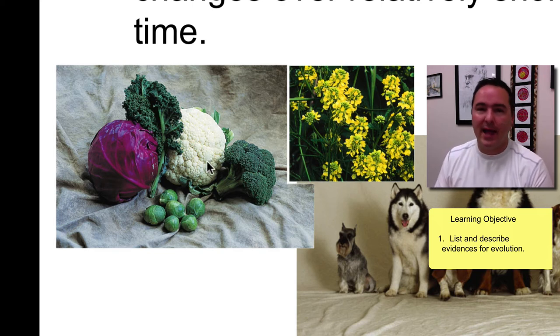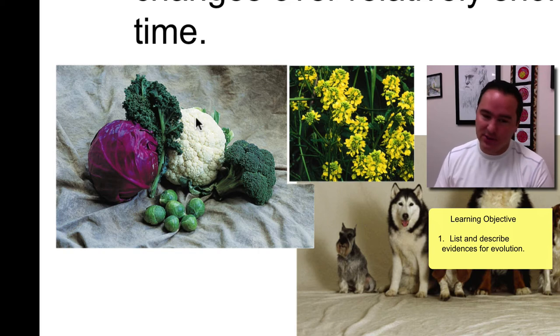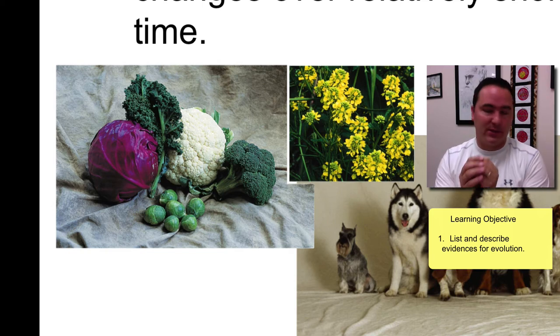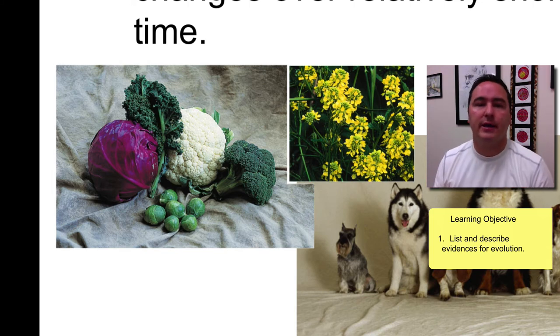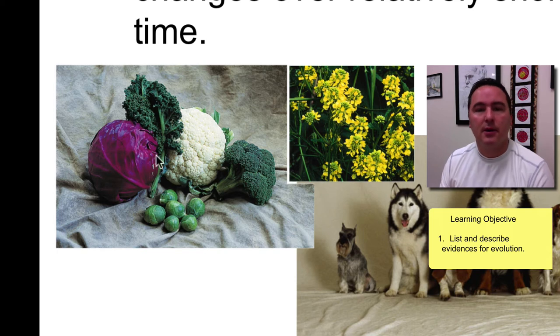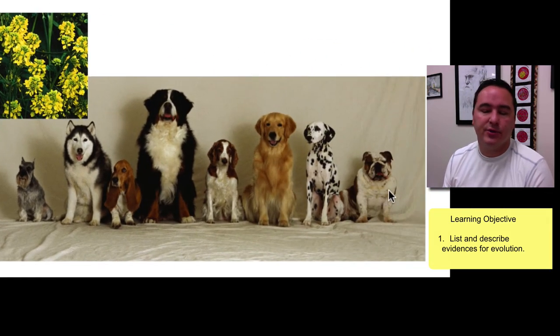This is documented. We know that this is what happened because there were farmers who said, 'I'm going to make a plant that has extremely large flower parts,' and so they selectively looked for those flowers in their field that had the biggest flower parts and those were the ones that they reproduced. They would do that over and over again each generation until eventually you get cauliflower, or you look for the plants that have the largest leaves and you get cabbage.